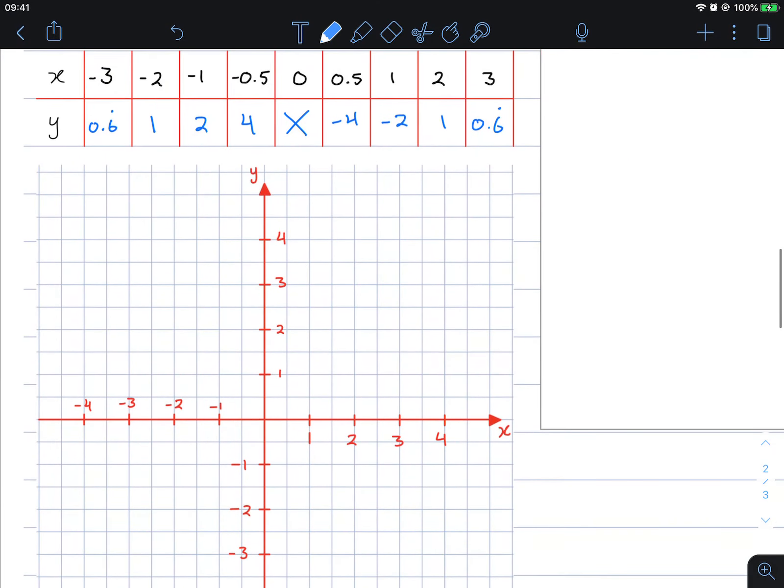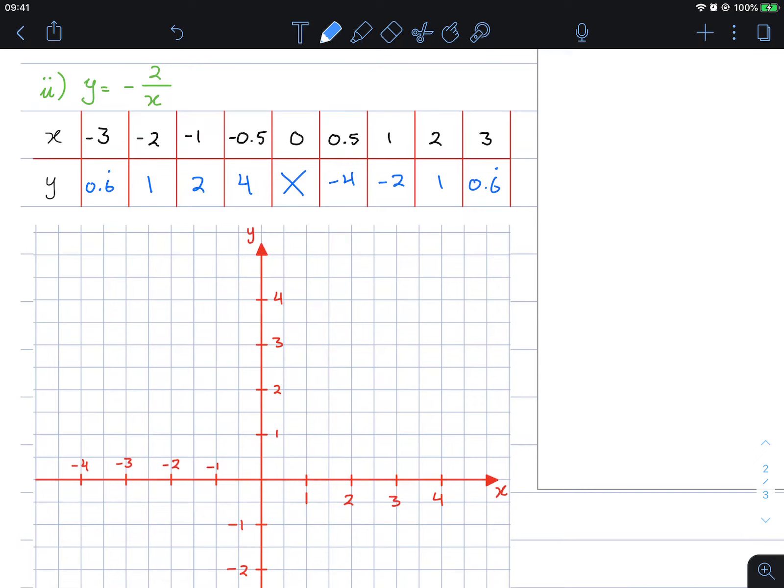Graphing these out, we get 0.5 at 4, 1 at 2, negative 2 at 1, negative 1 at 2, 2 at negative 1, 3 at 0.6. And I'm sure for this one we get half.